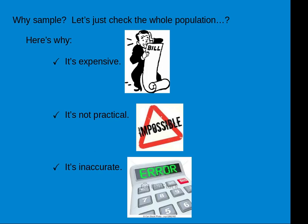And finally, there's a problem about accuracy and having errors. It's going to take a lot of time to talk to everyone in Bangkok. You might ask a person, and then maybe they'll move somewhere else in the city, and you'll ask them again — so you'll have counted them twice. That would introduce an error. So these are three reasons: expensive in time and money, not practical, and prone to having errors.